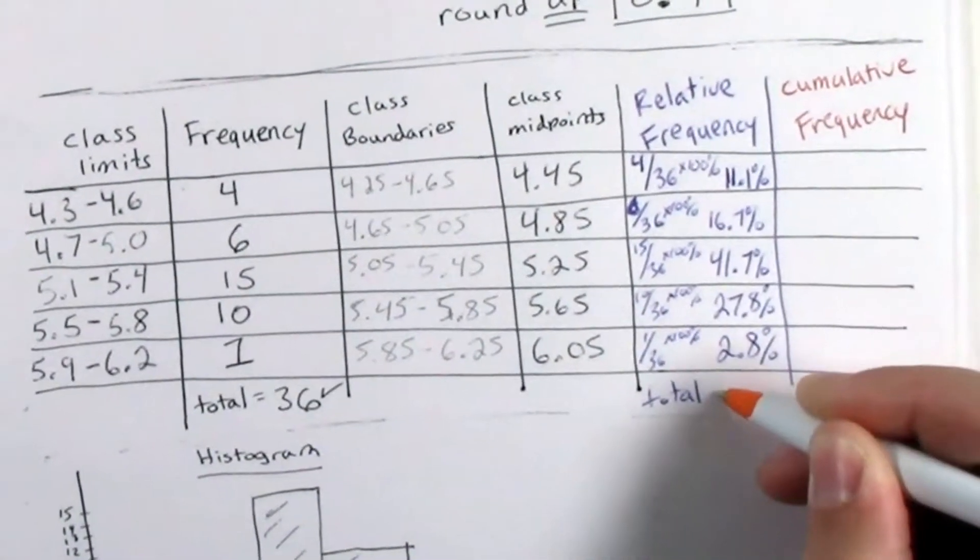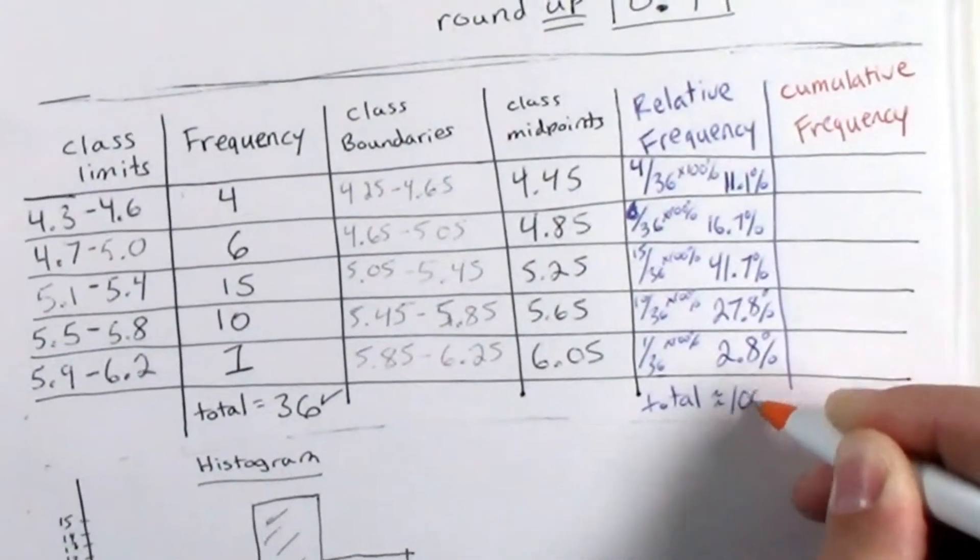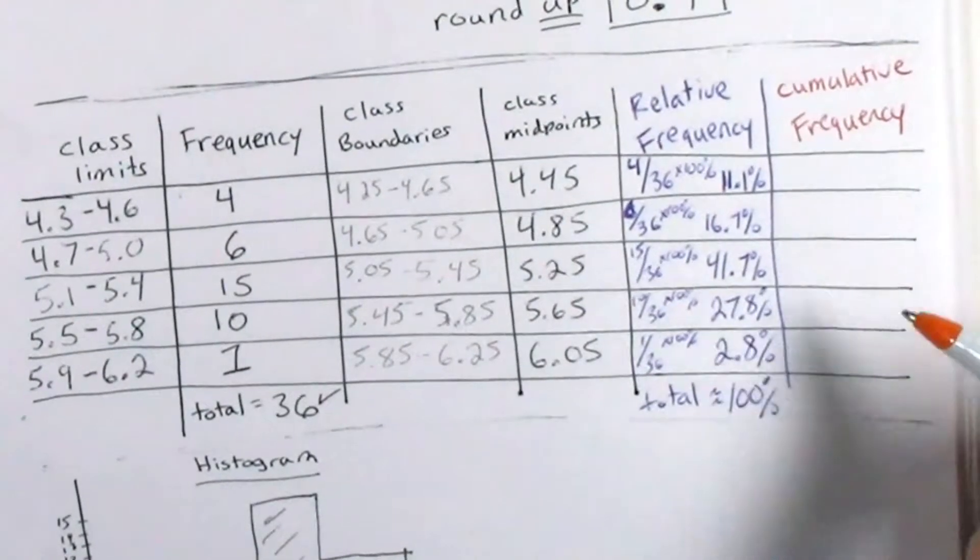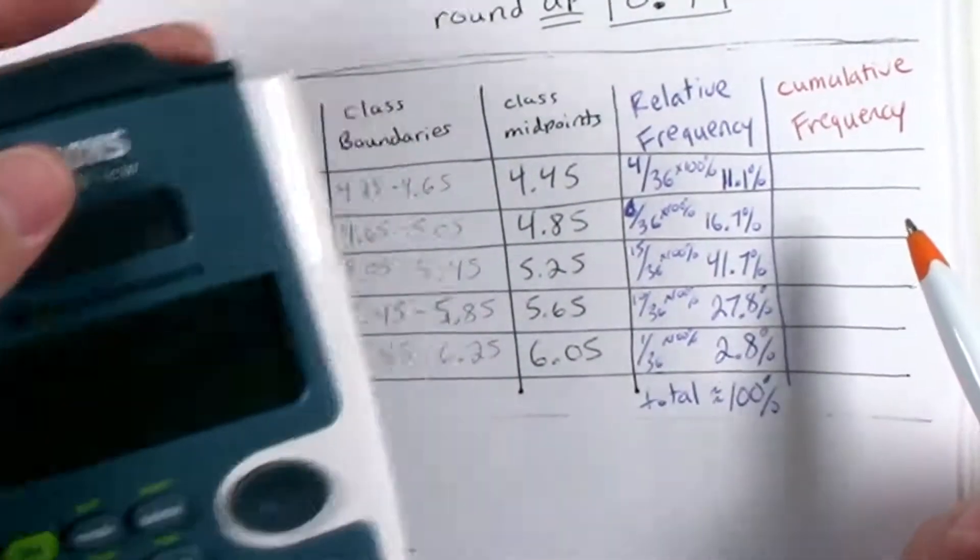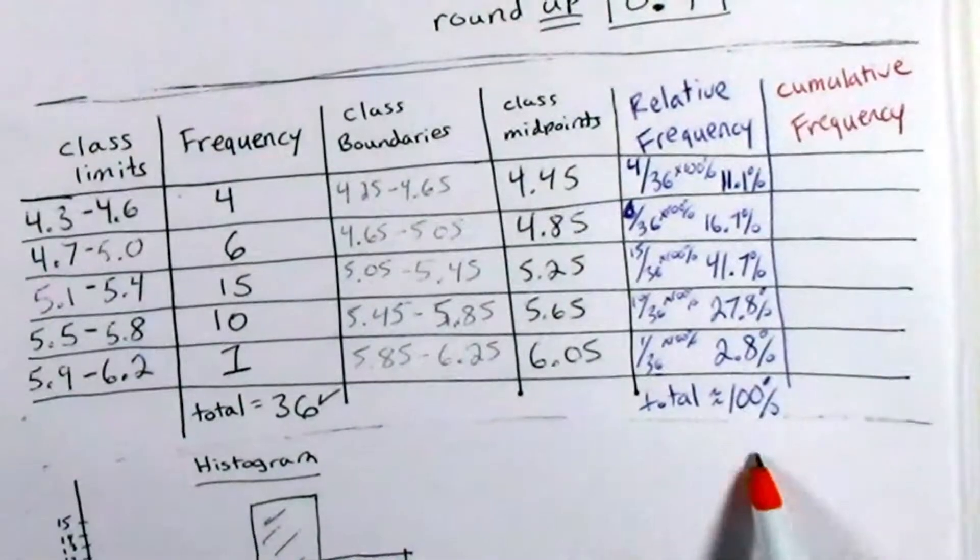It should be approximately 100%, all right? If I added them up without rounding, then I would have gotten exactly 100%.